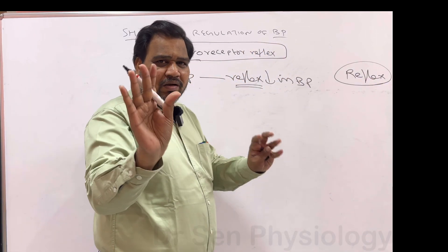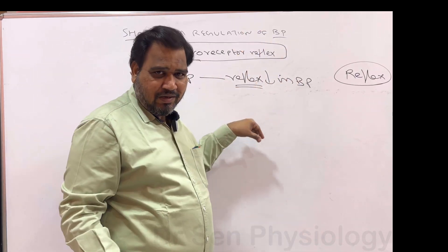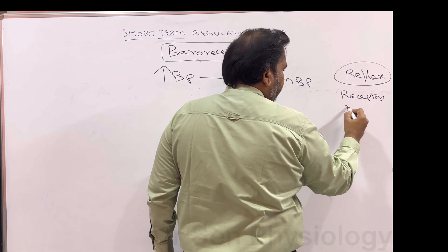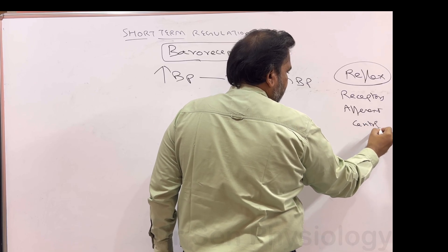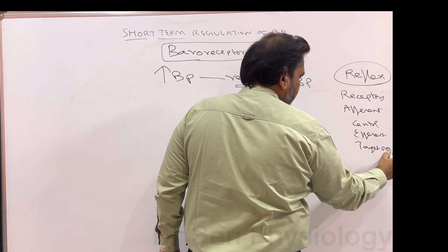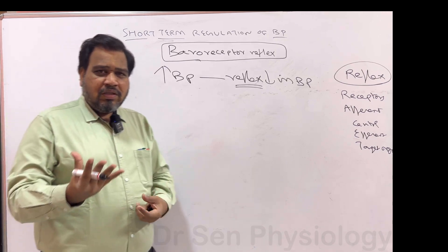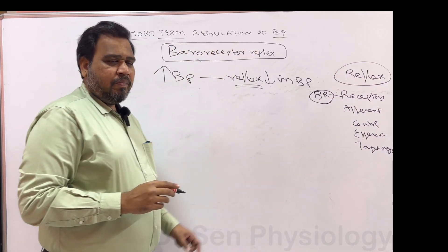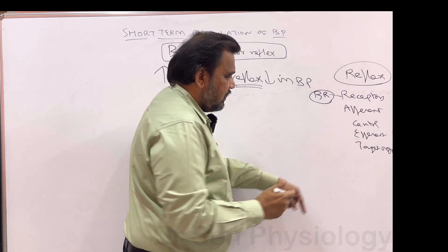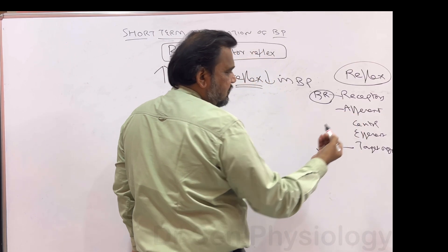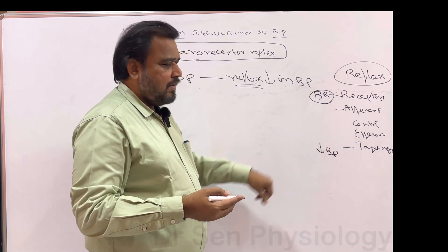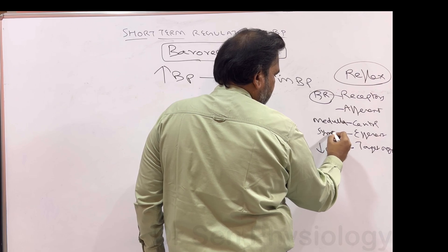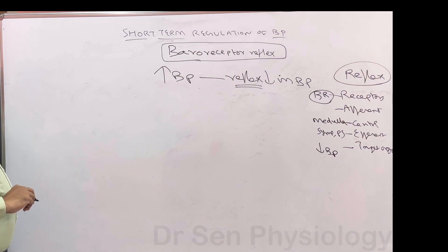In general, any reflex has components: receptors, afferent, center, and efferent. Here, blood pressure is increased; that has to be sensed by receptors, and here we know it is baroreceptors. Baroreceptors sense the increase in blood pressure. The target result is obviously a decrease in blood pressure. The center is medulla, and the afferents are sympathetic and parasympathetic.